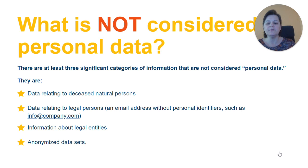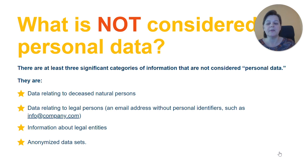You might get the impression that pretty much everything amounts to personal data, and you wouldn't be that far from the truth. Academics have speculated that if the trend continues, in the future every piece of information will be considered personal data. But under the GDPR, there are at least three significant categories of information that are not considered personal data: data related to deceased natural persons, data related to legal persons, and anonymized data.